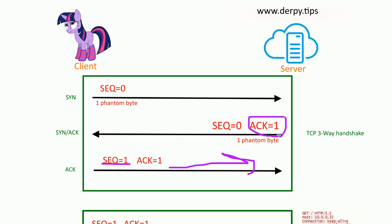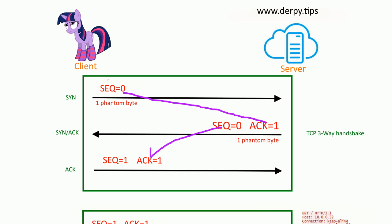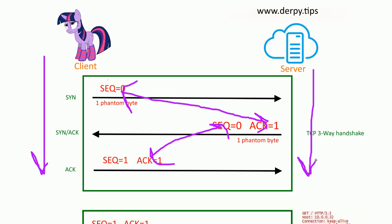You can see how these acknowledgements go back and forth, and the counters increase in this pattern of hopping: sequence, ACK, sequence, ACK. You can also look at it from the perspective of the client — we sent a phantom byte, we start with zero, so the next one we send should be one. The same thing applies to the server. You can look at it either way: hopping with acknowledgements and sequences, or keeping track of the client perspective going down, or the server perspective.